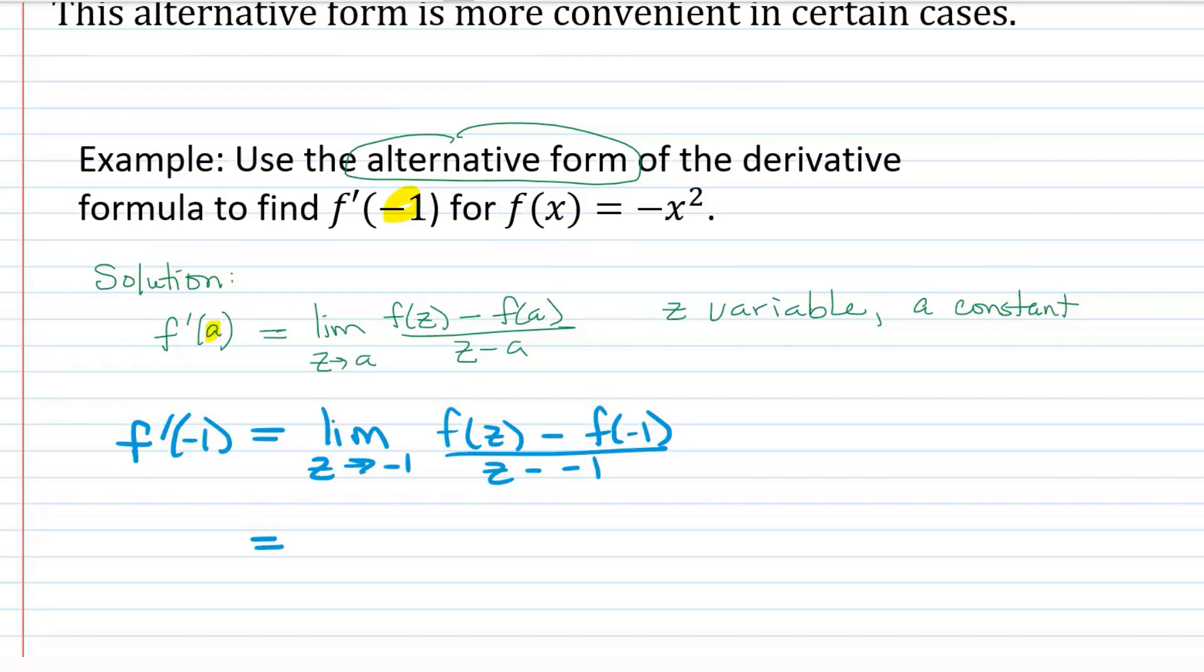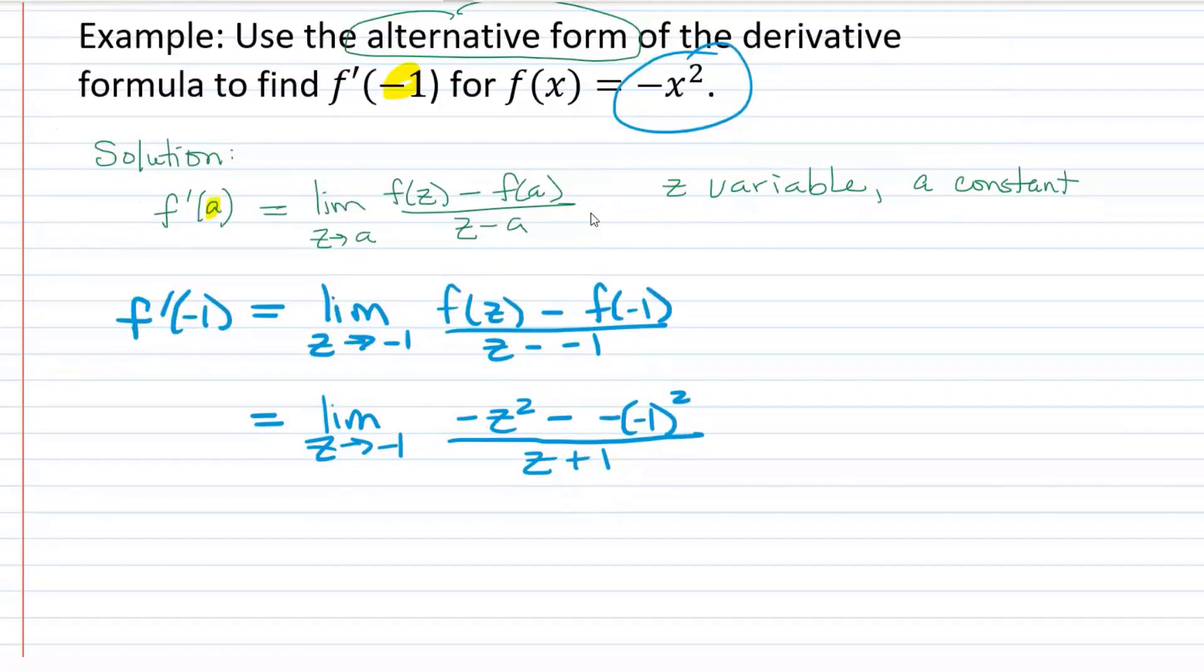Plugging into the function, we have the limit as z approaches negative one. f of z is just going to be plugging into this function, we're going to have a z instead of an x. So negative z squared minus, and then we're going to have negative negative one squared, lots of negatives, watch out there, divided by z plus one. So that means the limit as z approaches negative one of negative z squared plus one over z plus one.